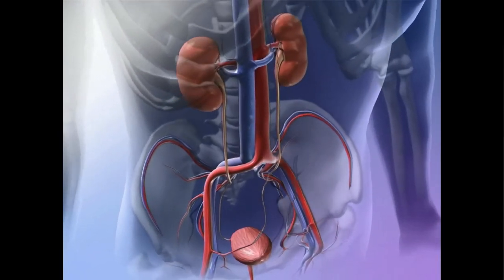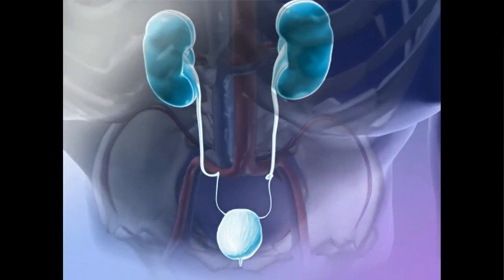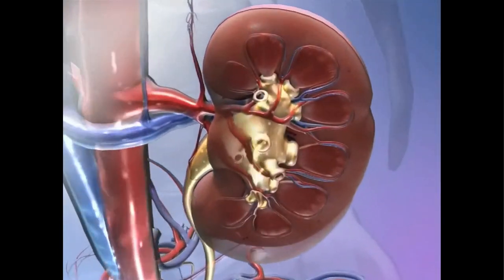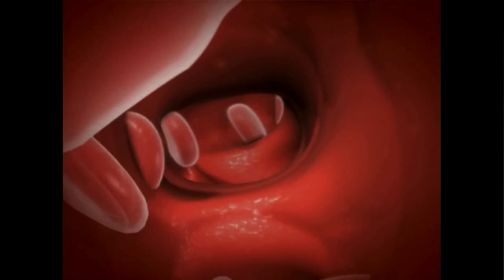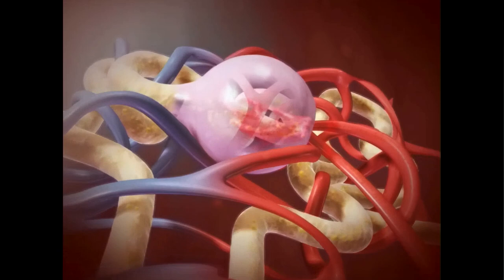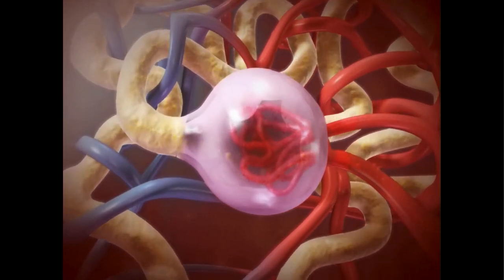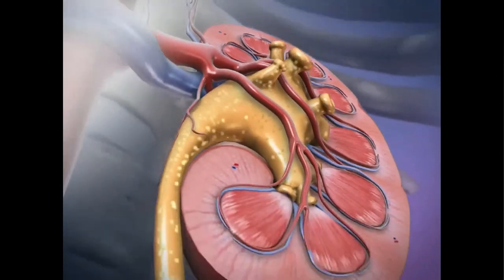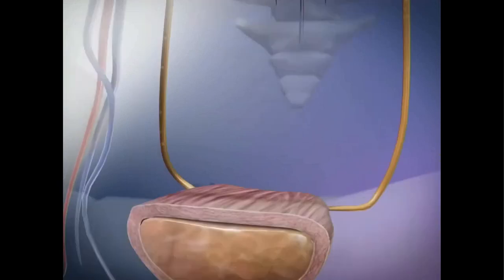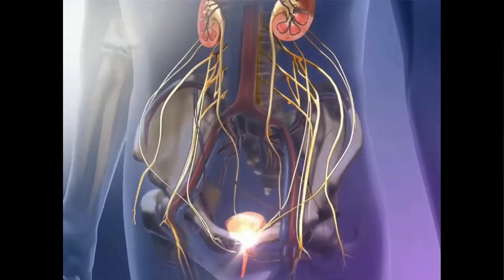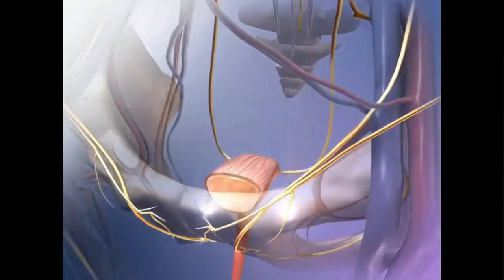The structures of the urinary system function to filter blood and remove waste from the body. The kidneys are the blood-filtering organs. Blood enters the kidneys and within them, substances are filtered out of the blood into urinary structures. Some substances are then reabsorbed back into the blood, and others are secreted into the urine. This three-step process cleans blood and creates the waste product urine. Urine exits the kidneys and moves down the ureters to the bladder, and as the bladder fills, muscular contractions push urine out through the urethra in a process called micturition.